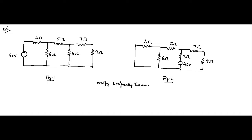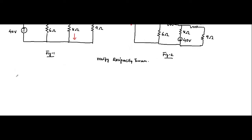In order to prove the reciprocity theorem, we have to find out the branch currents. Since the shifting of the voltage source happened to the third branch, we have to determine the current flowing through the 8 ohm resistance in each circuit. If these two current values are equal, then the reciprocity theorem is valid. Let us redraw the first circuit.